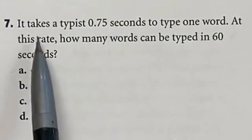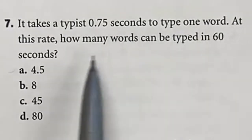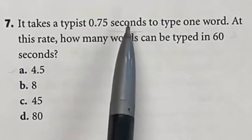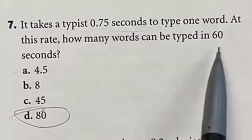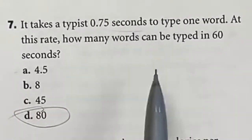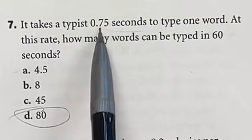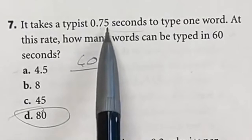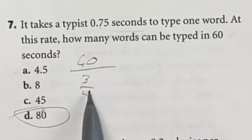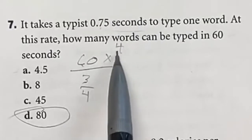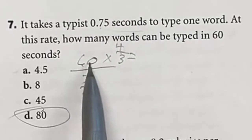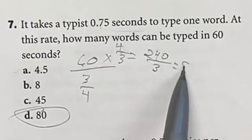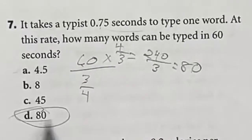Number 7: a typist takes 0.75 seconds to type one word. At this rate, how many words can be typed in 60 seconds? They type more than one word per second, so the answer has to be higher than 60 — and 80 is the only answer bigger than 60. To solve it: 60 divided by 0.75. Think of 0.75 as the fraction 3/4. Dividing by a fraction means you multiply by the reciprocal, so 4/3. 60 times 4 is 240, and 240 divided by 3 is 80 — answer D.